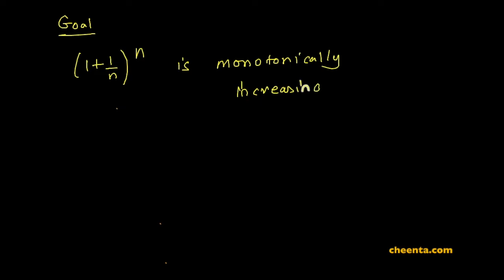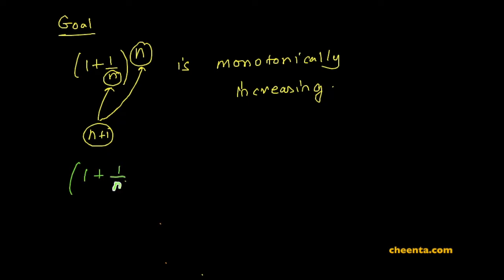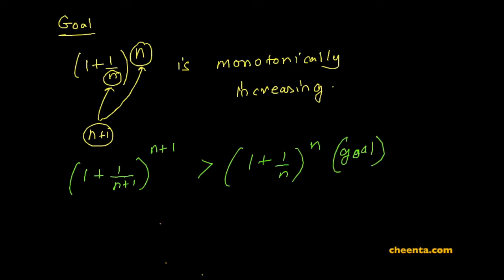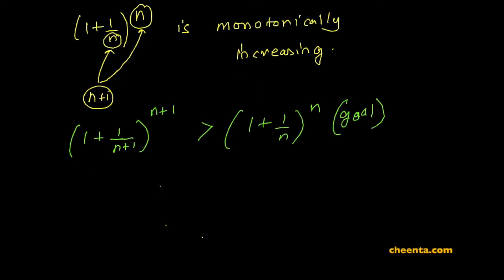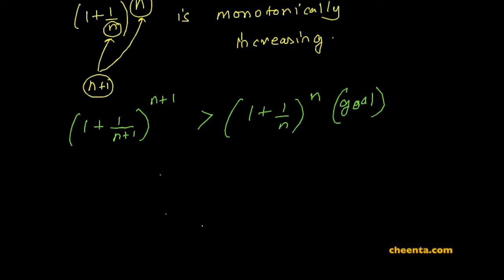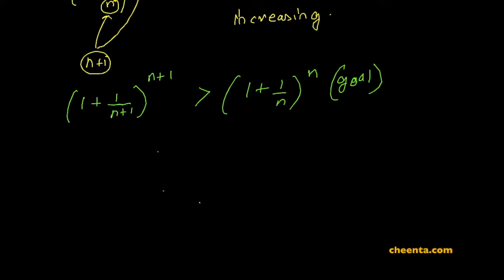What does that mean? It means that if you replace n by n+1, you will get a larger number. So we want to show that (1 + 1/(n+1))^(n+1) is greater than (1 + 1/n)^n. This is our goal. There is a very interesting application of the AM-GM inequality which will solve this. Why don't you pause the video and give it a try yourself, then come back to this discussion.